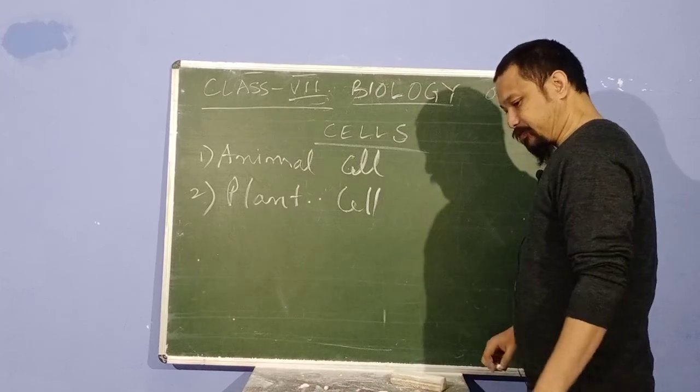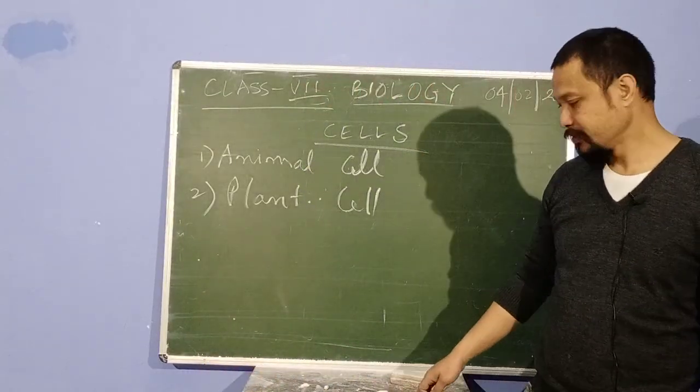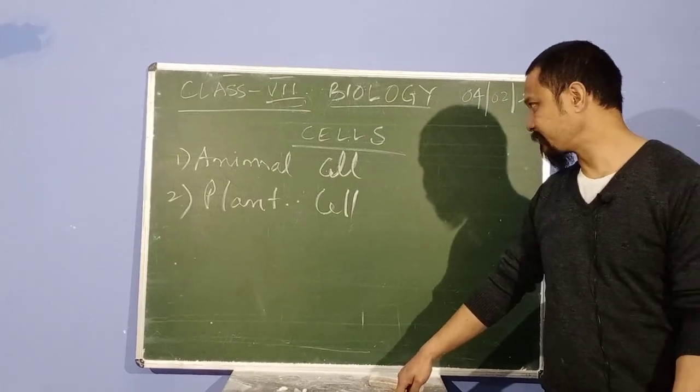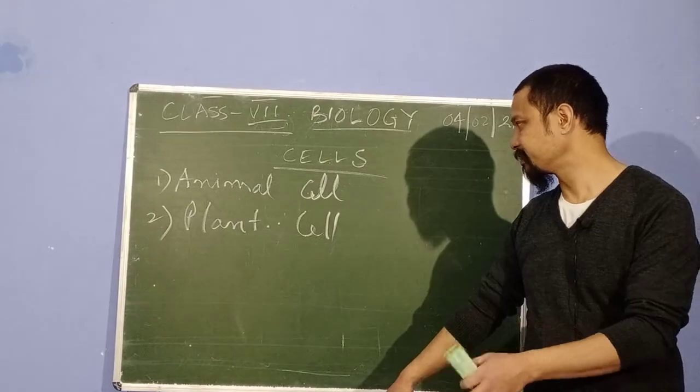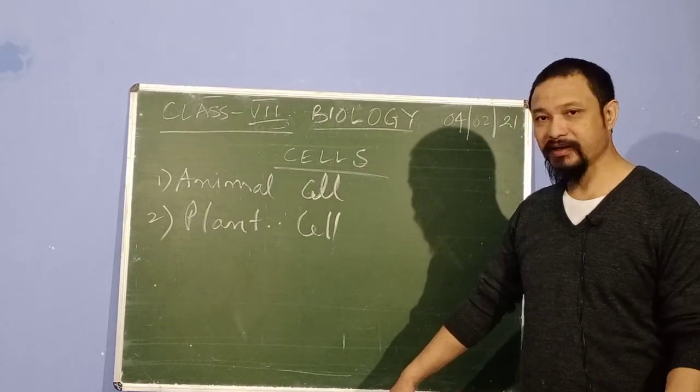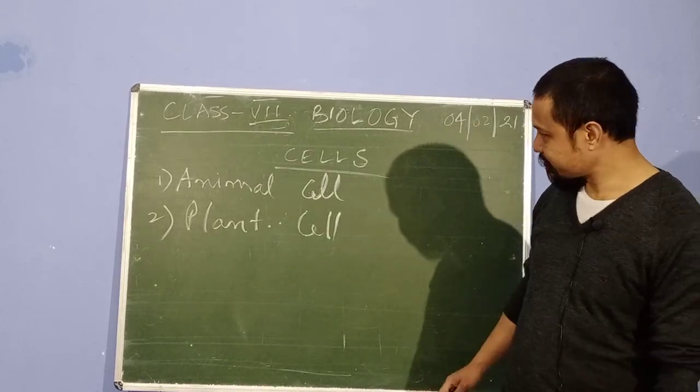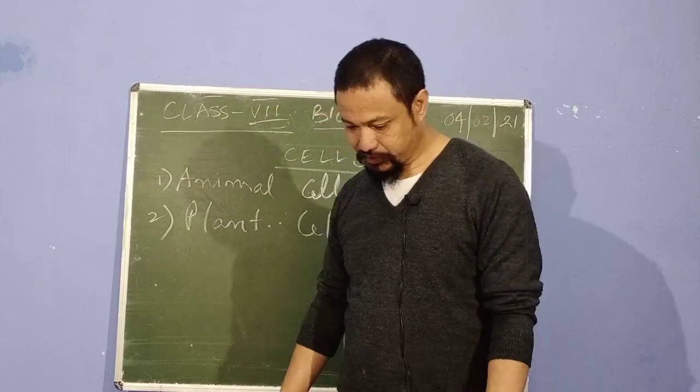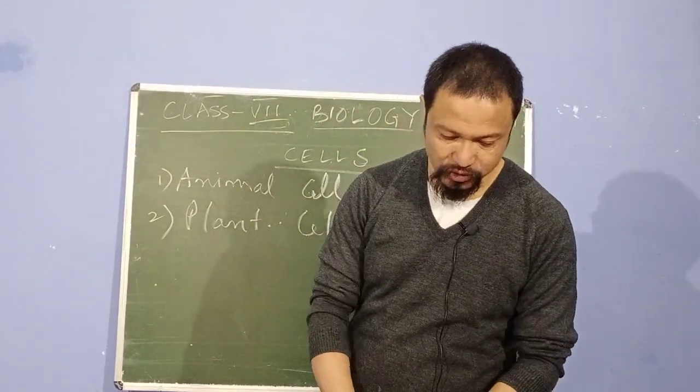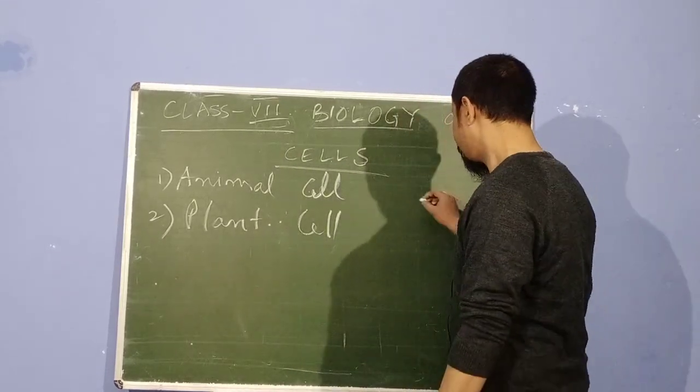Every living organism is made up of cells, and the way the cells function depends and is different from different organisms. Plants and animals have different cells, but they have cells, right? So there are two types of cells: plant cells and animal cells. And each and every cell has a lot of small structures inside it.